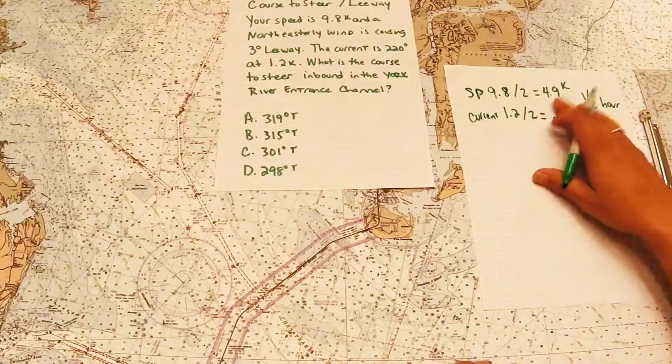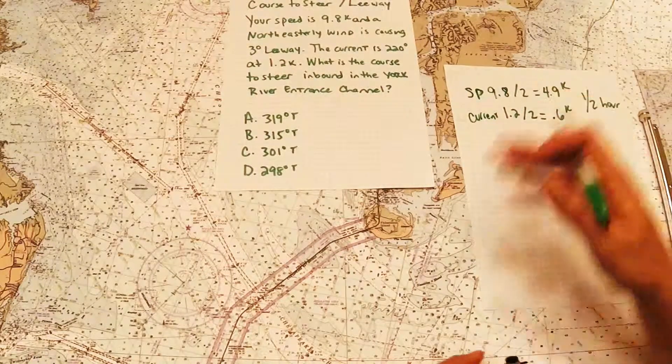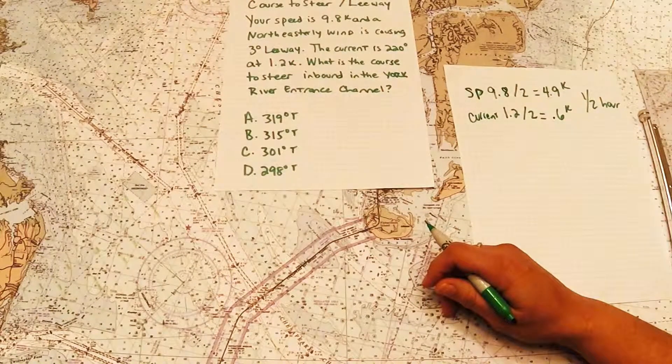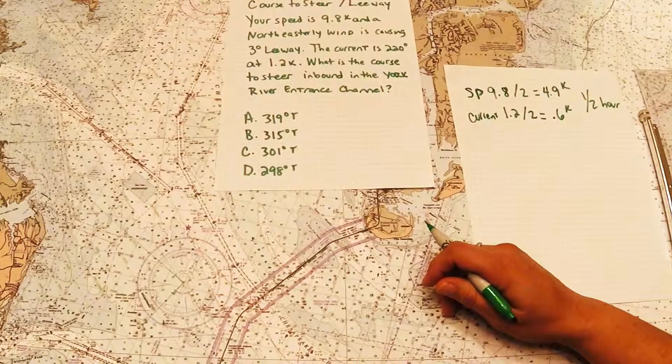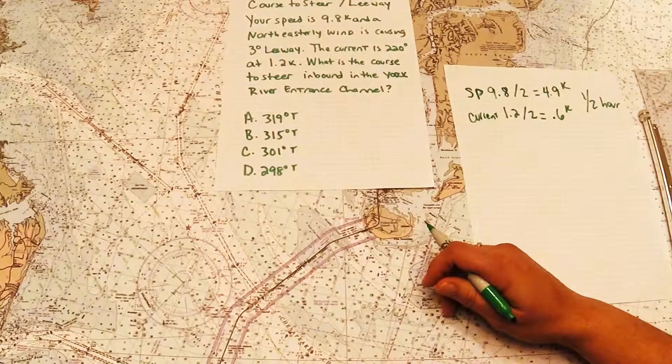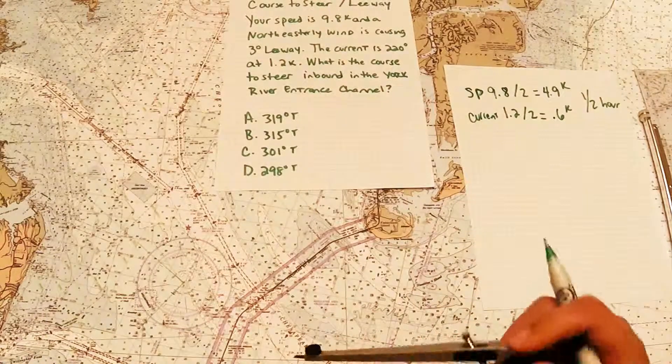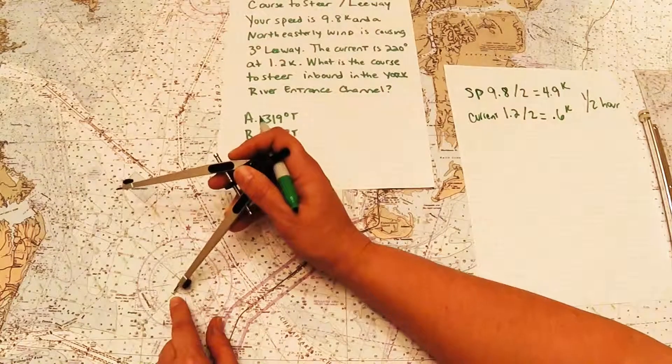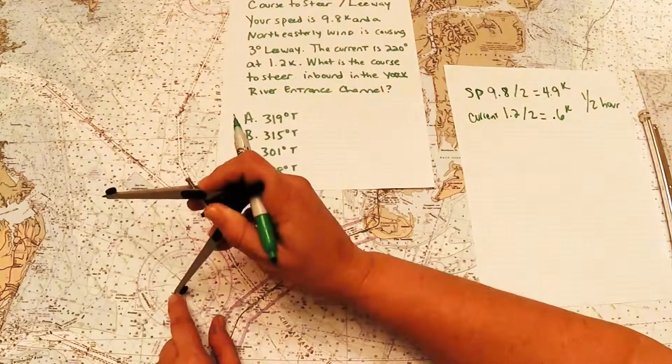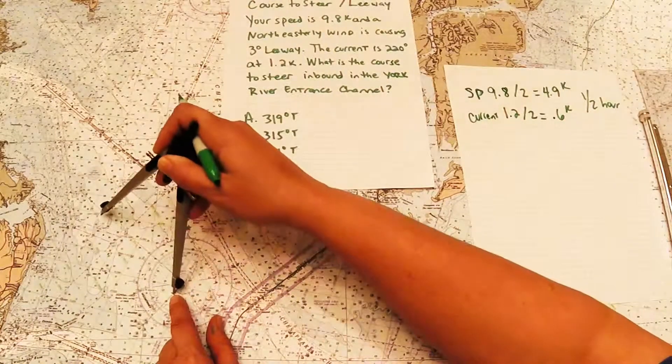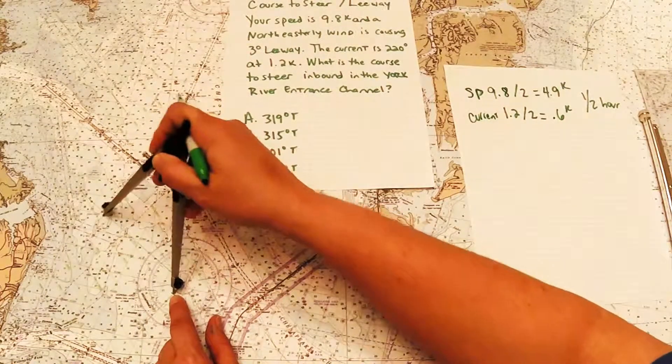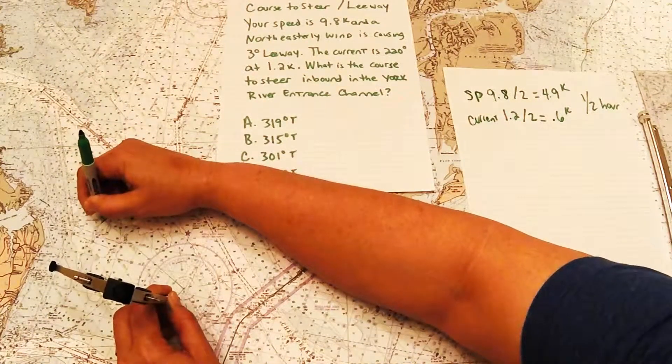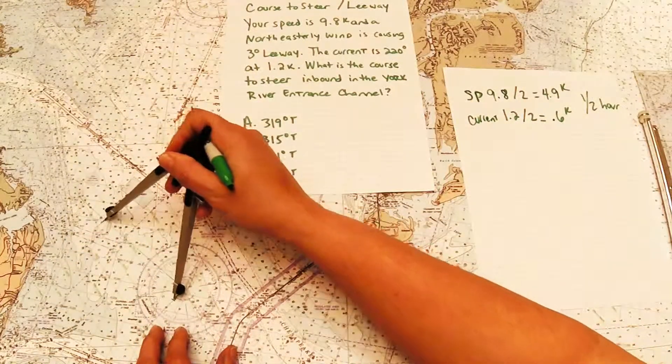Now, the next step is to plot your speed, what you would do in a half hour. So I'm going to use my compass, and I'm going to dial up 4.9 miles. Because 4.9 miles is how far I would go in a half hour. So I've got 4.9 on my latitude scale. Now here's the tricky part, you're no longer here in a half hour, you're down here. So what we're going to do is put our pointed end of our compass onto the line that we marked for our set and drift, and we're going to cross over our course line. And I'm going to go ahead and make that a little bit darker so you can see it really good. So I'll just mark that here.